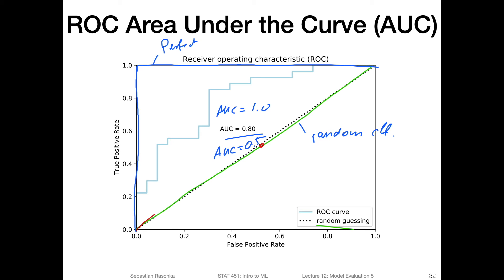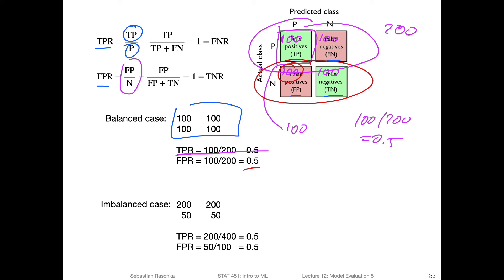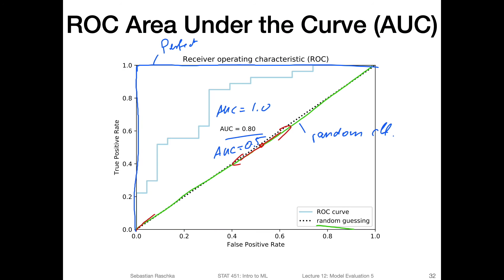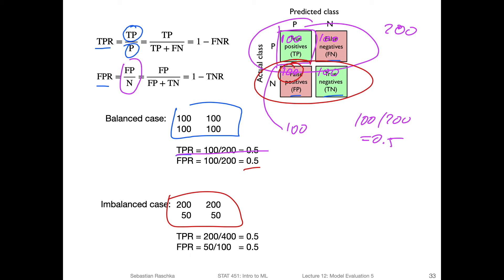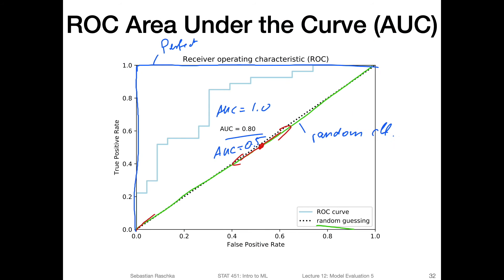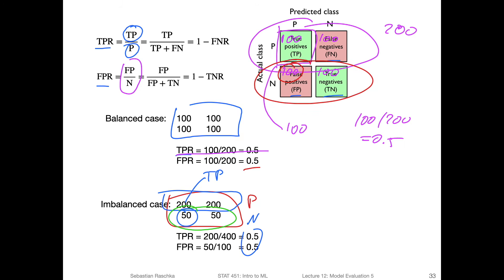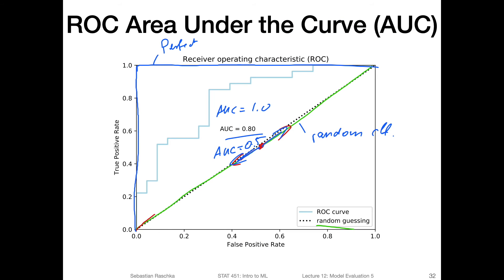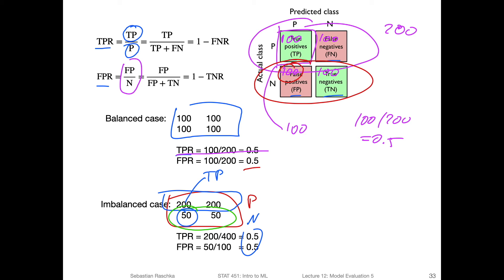If we shift the threshold of a random classifier left and right, we slide along this diagonal. For the imbalanced case, it also starts at 0.5 and goes left and right along the diagonal. So this is how a random classifier would look on the ROC curve and the intuition behind it.